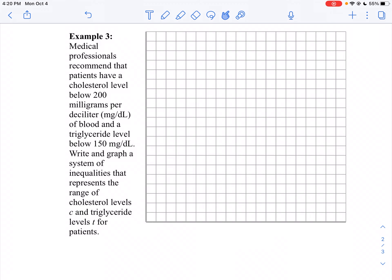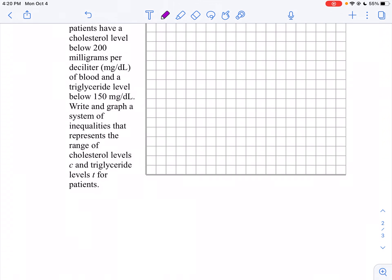It's pretty straightforward here. I want C to be my cholesterol. I want that to be below 200, so C is less than 200. My triglycerides I want to be below 150, so T is less than 150.